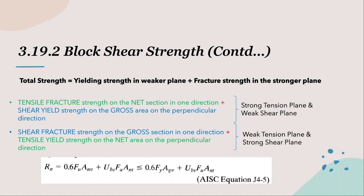AISC gives us an equation to do just that. It may seem like a long equation but it is much simpler than it looks. The terms on the left and right of the inequality sign are the two conditions discussed above. The term with a factor of 0.6 is the shear strength term. After numerous experiments, it has been found that the shear fracture strength of the member is about 60 percent of its maximum tensile strength — hence the 0.6 factor.